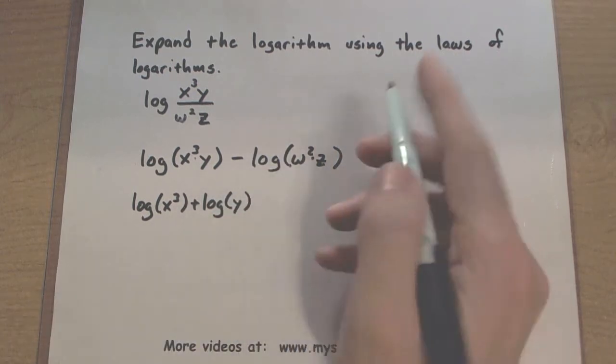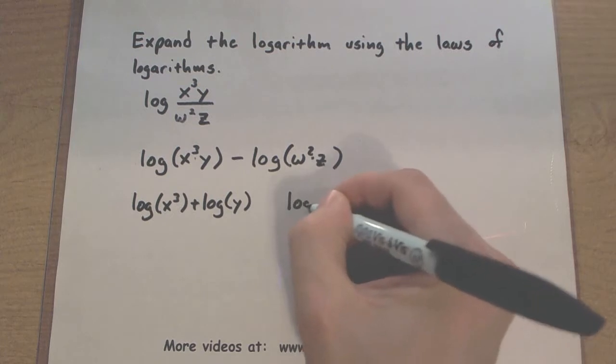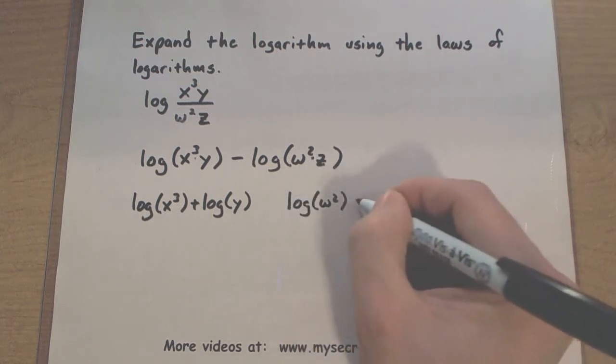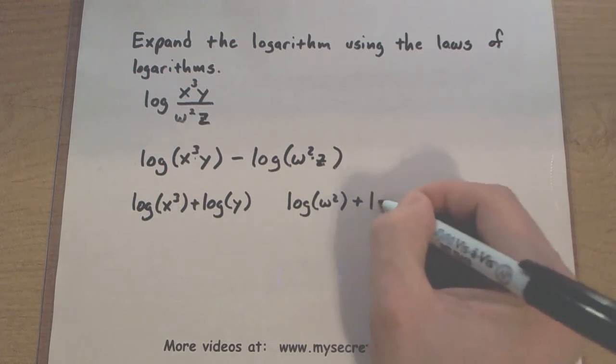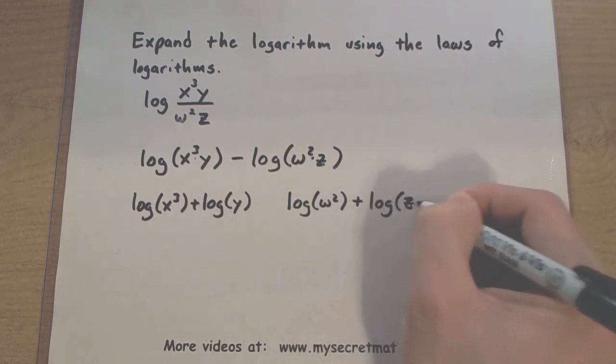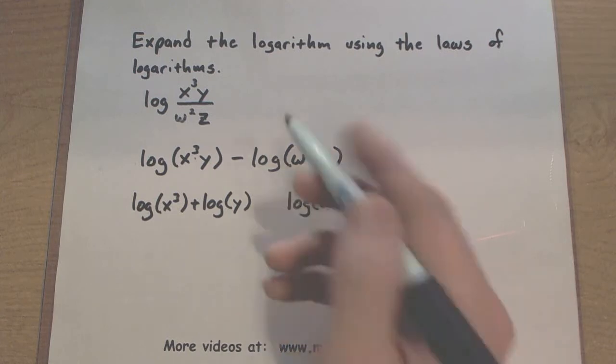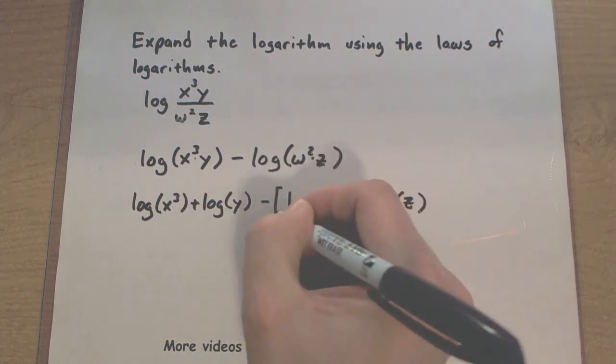So that will split up these two and let's see I need to split up these two. So w squared plus log of z. And we want to be very careful with our signs. I still want to subtract off this entire thing and so all of this is still being subtracted.